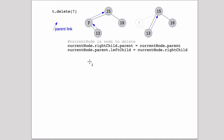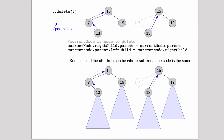One thing mentioned earlier: whenever you're working with linked structures, the easiest way to figure out how to write your code is to do a diagram that shows all the links graphically before and after the operation you want to do. Then identify which links are actually changing — those are the statements you have to write. Keep in mind that the children can be whole subtrees, but everything works fine because we're not affecting any of the links for nodes below what we're deleting, so they're still going to point to anything underneath.